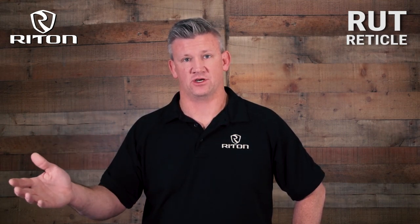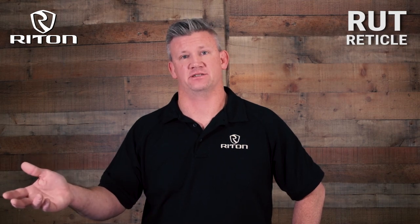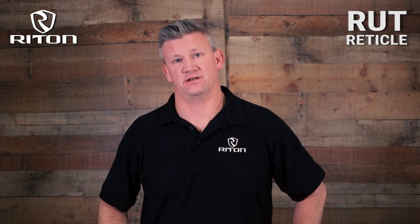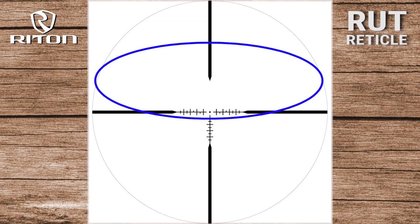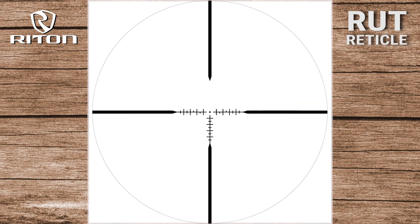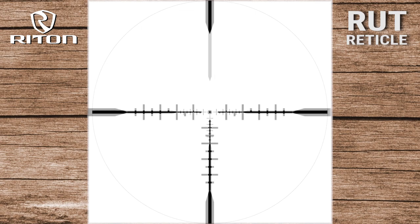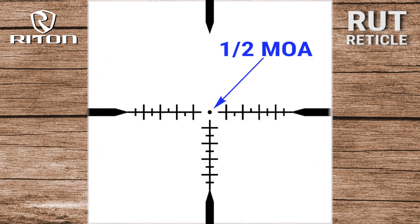Also when using a scope, so that we know our accurate sub-tensions. Now let's talk about this reticle. The Rut Reticle can be used in many scenarios but is designed specifically for hunting. One of the things we've done with this reticle is take a traditional duplex reticle and opened up the upper hemisphere so that there's a wider field of view, so that you can see your animals.